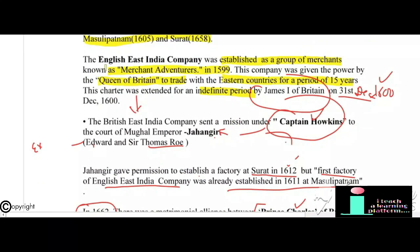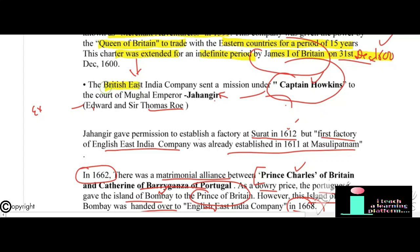The English East India Company was established as a group of merchants known as 'Merchant Adventurers' in 1599 and given power by the Queen of Britain to trade with eastern countries for 15 years. This charter was extended indefinitely by James I of Britain on 31st December 1600. The first British mission was sent under Captain Hawkins to the court of Mughal Emperor Jahangir. In chronological order, the British missions were: first Captain Hawkins, second Edward, and third Sir Thomas Roe.